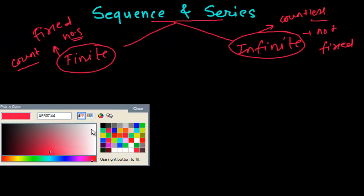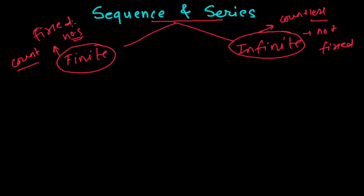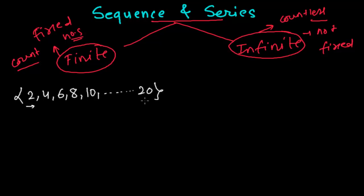Let me give you an example to make it more clear. Suppose here are some even numbers: 2, 4, 6, 8, 10, and so on up to 20. This sequence starts at 2 and ends at 20 — all even numbers from 2 to 20. This is a finite sequence because the number of terms is fixed, we can count them. If you add a plus sign it becomes a series; with commas it's a sequence.